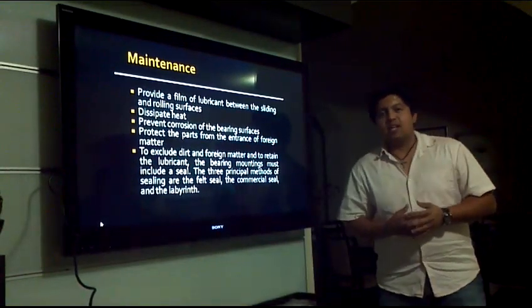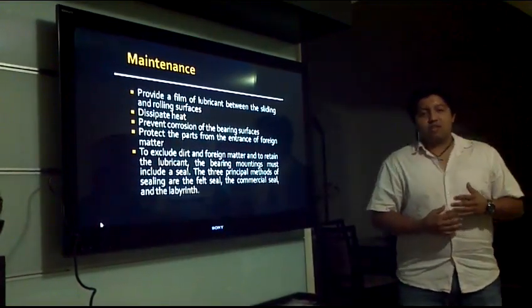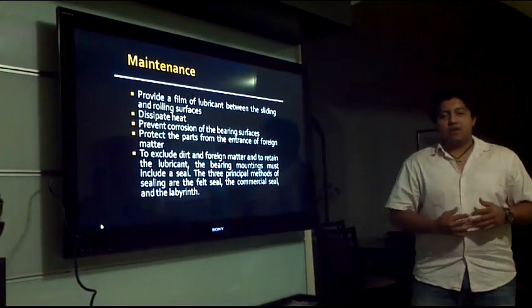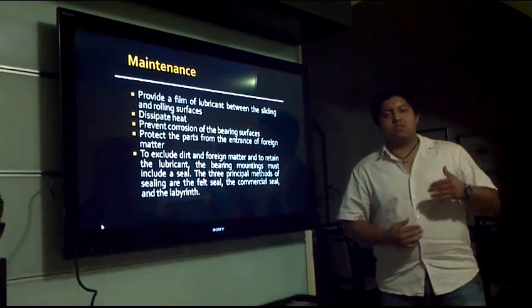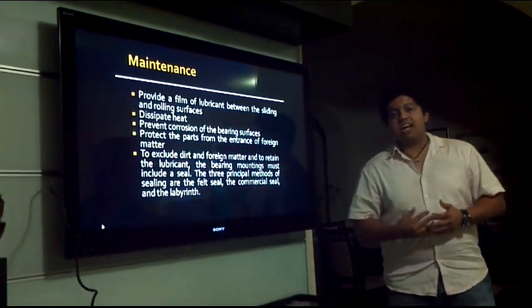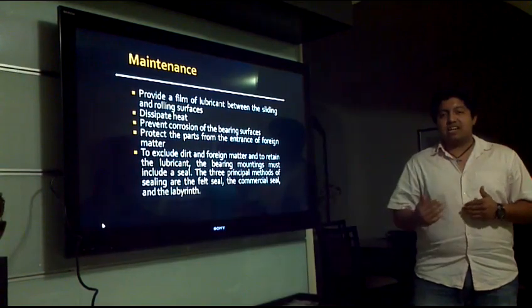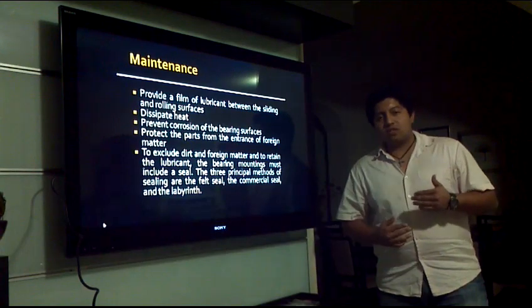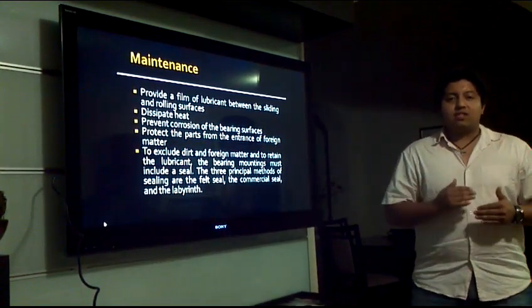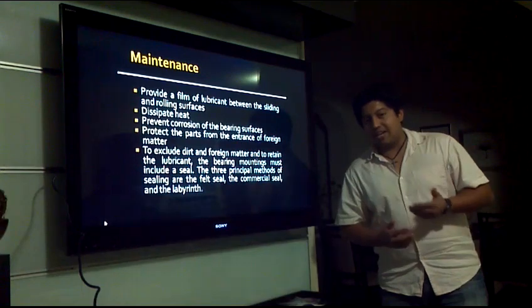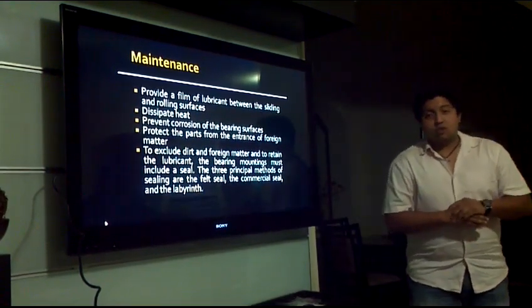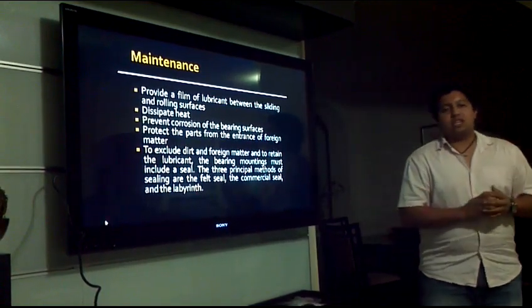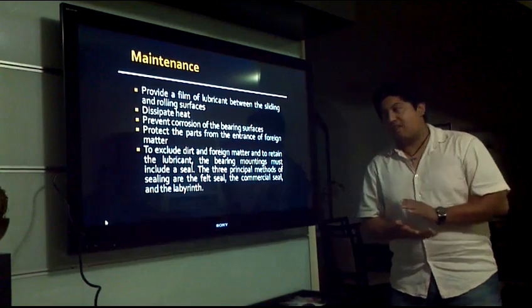Let's talk about maintenance now. Bearings might seem to be very difficult and complex elements to design, but they're actually very easy to maintain. The maintenance of bearings can be done either with grease or oil. Their function is to provide a film of lubricant between the sliding and rolling surfaces. It helps to dissipate the heat. It also prevents corrosion of the bearing surfaces. It protects the parts from the entrance of foreign matters. Another way to protect the bearings is also using seals. There are three principal types of seals in the market and there are the felt seal, the commercial seal, and the labyrinth.